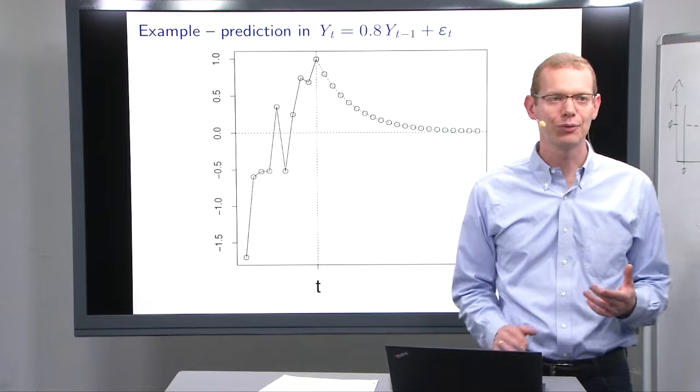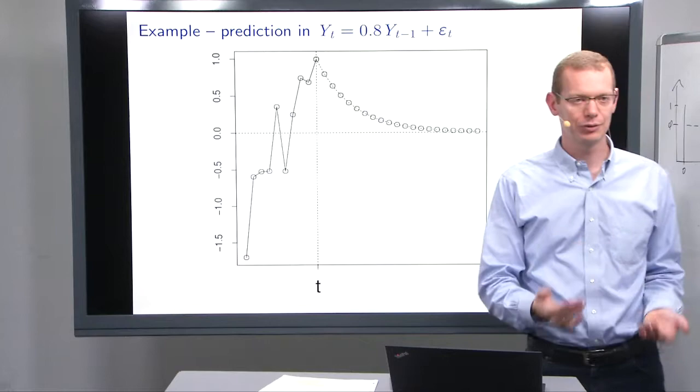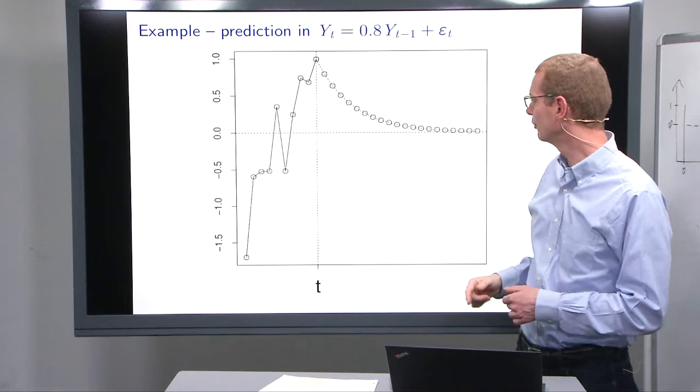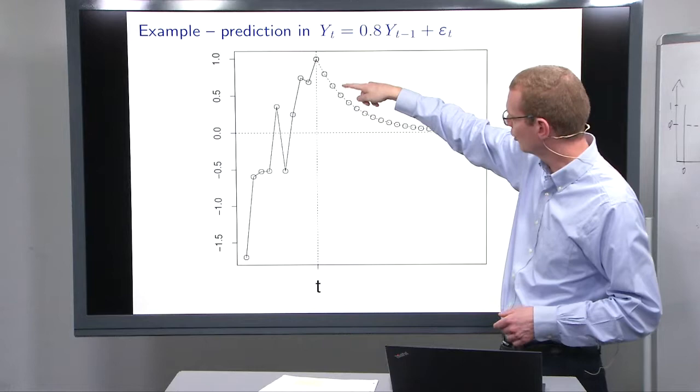As an example, we have observed some data and at some point we want to make a prediction. We see that the prediction goes towards zero, which is the mean value of this particular process. This is a case where phi is 0.8. We get a value, then 0.8 times that, then 0.64, and so forth, all the way down. So this is the prediction.